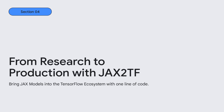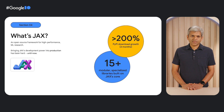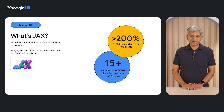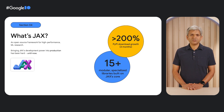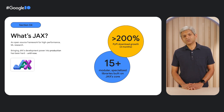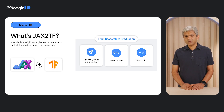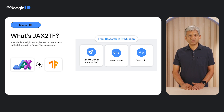Another area we'll cover today is what we're doing to support our research community better, especially with the emergence of JAX. Many of the ML advancements that are now household names had their beginnings in research — this includes the latest models in the news, like BARD and ChatGPT. These architectures came from Google's own published research. JAX has emerged as a trusted tool for much of the research behind these models, but productionizing research is hard. So we're very excited to introduce JAX2TF, which provides a clear pathway from JAX to the TensorFlow ecosystem.